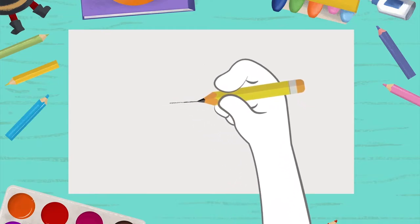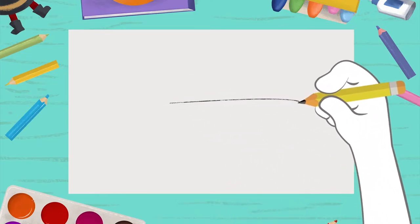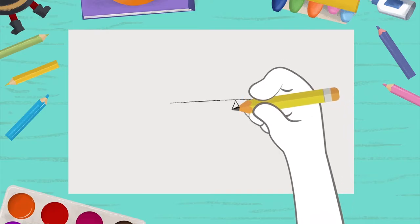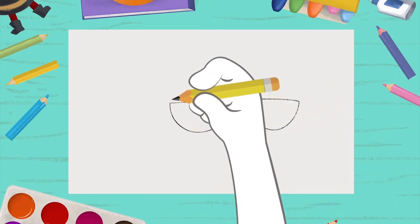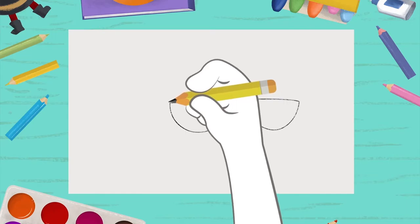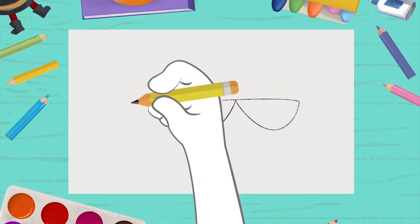First, draw the glasses like this. Watch! Now, right here, you draw an upside-down triangle.